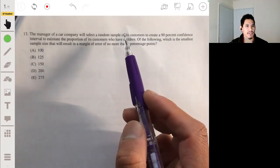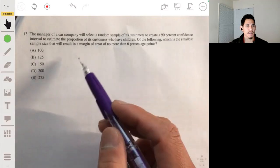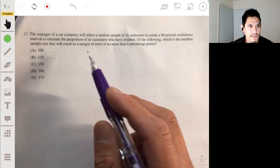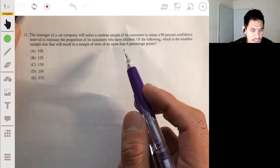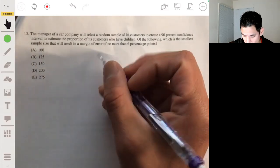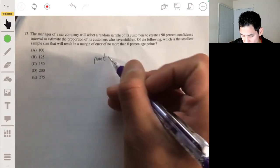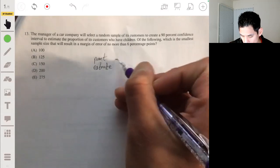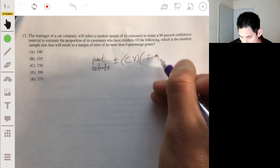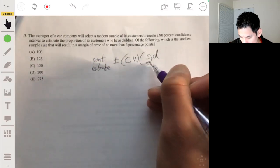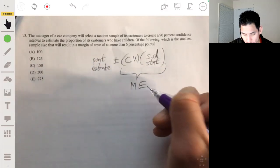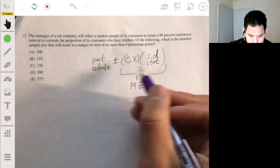The manager of a car company will select a random sample of its customers to create a 90% confidence interval to estimate the proportion of the customers who have children. Of the following, which is the smallest sample size that will result in a margin of error of no more than six percentage points. Okay, so remember the margin of error is basically like the, I mean, you have the point estimate, when you're making a confidence interval, you have the point estimate, plus or minus your critical value, times the standard deviation of the statistic. The margin of error is this leftover part, basically how much you could deviate from the point estimate, plus and minus.